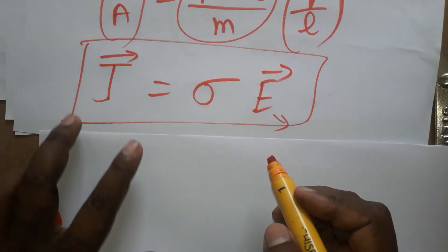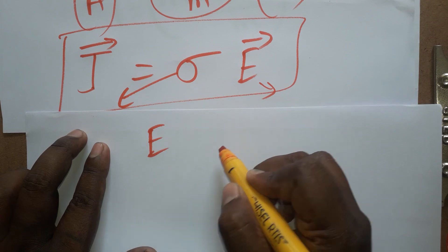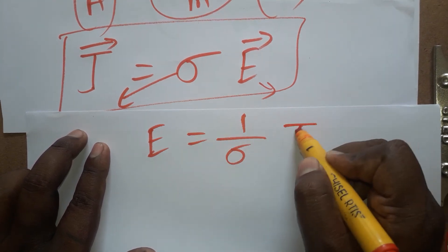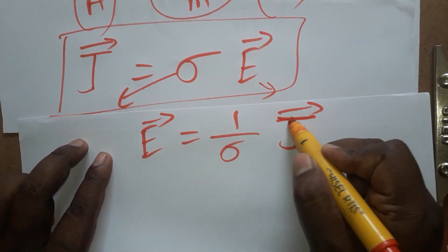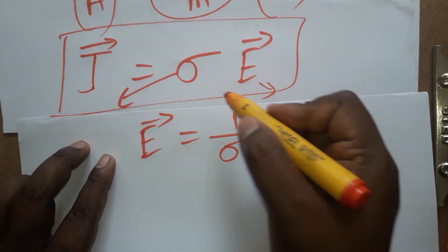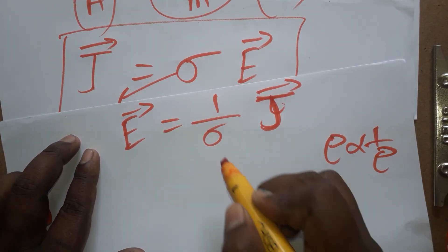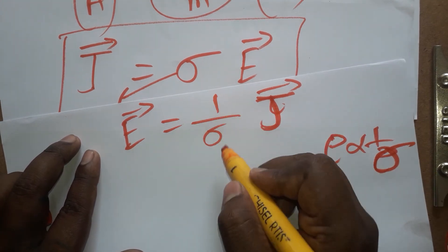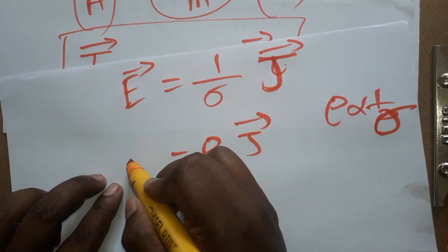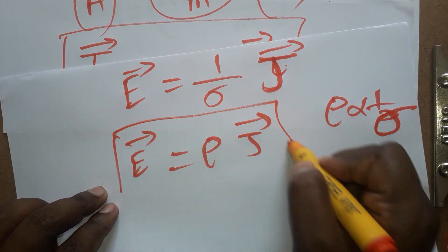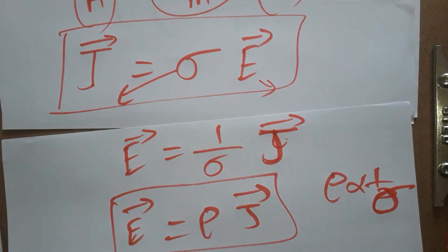If you want to write the same equation in terms of resistivity, you rearrange to get E = (1/σ)·J. Since resistivity ρ is inversely proportional to conductivity, one divided by sigma is resistivity ρ. So E = ρJ. This is the same equation written with resistivity instead of conductivity.